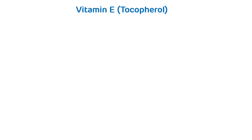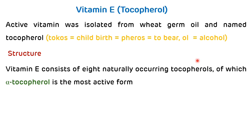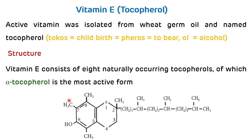Active Vitamin E was isolated from wheat germ oil and it was named as tocopherol, where 'tocos' means childbirth, 'pherein' means to bear, and 'ol' stands for alcohol. Vitamin E consists of eight naturally occurring tocopherols, of which alpha-tocopherol is the most active form. Its structure shows a chromanol ring with an isoprenoid side chain attached.